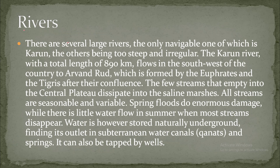There are several large rivers, but the only navigable one is the Karun River. The others are too steep and irregular. The Karun River, with a total length of 890 kilometers, flows in the southwest of the country to the Arvand Rud, which is formed by the rivers Euphrates and Tigris.